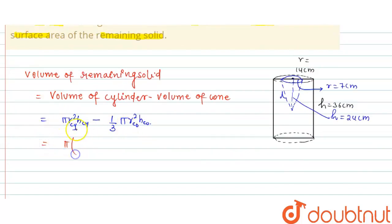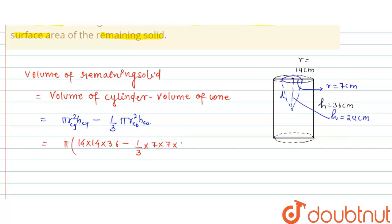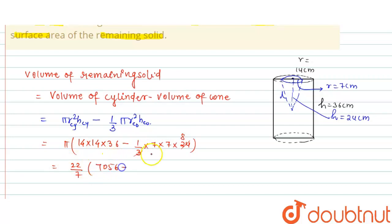The radius of cylinder is 14. So we write: π × [14 × 14 × 36 − (1/3) × 7 × 7 × 24]. We cancel 24 by 3 to get 8, and take π as 22/7. So 14 × 14 × 36 = 7056, and 7 × 7 × 8 = 392.